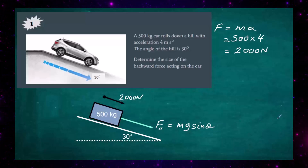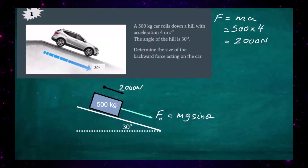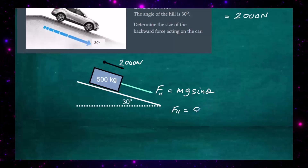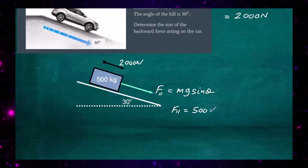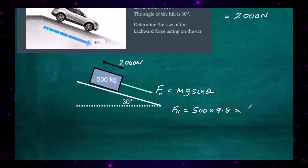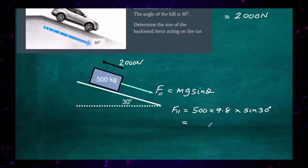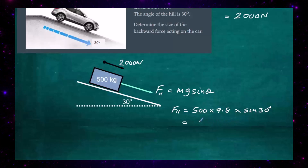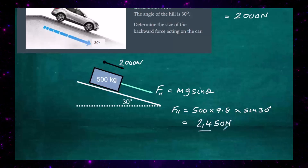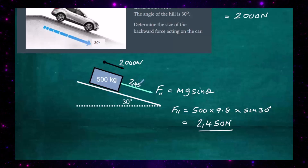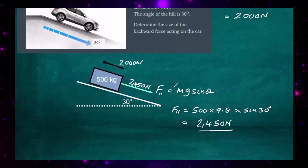It's the weight component parallel to the slope, so we just plug in the numbers: F parallel equals 500 times 9.8 times sine of 30 degrees. Sine 30 is one half, so that comes out to be 2450 newtons acting down the slope.